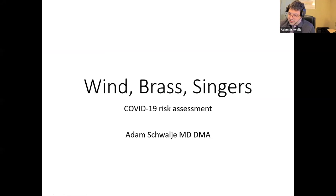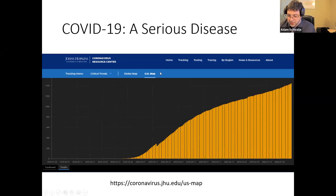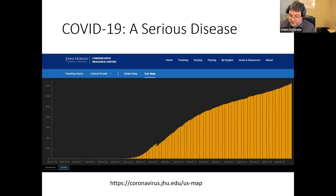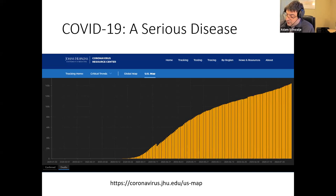This is just a brief overview to share so that we're all on the same page as we start discussing these issues in more detail. COVID-19 is indeed a serious disease. This chart from Johns Hopkins displays deaths from COVID-19 in the United States, and you can see that the trend continues to increase. We're approaching one in 2,000 Americans dead from COVID-19. This is a serious problem.